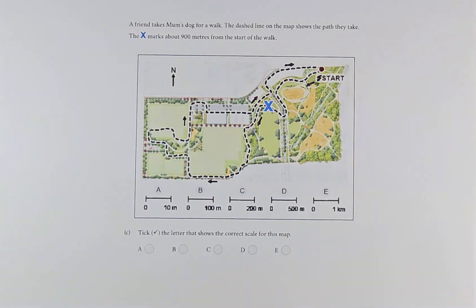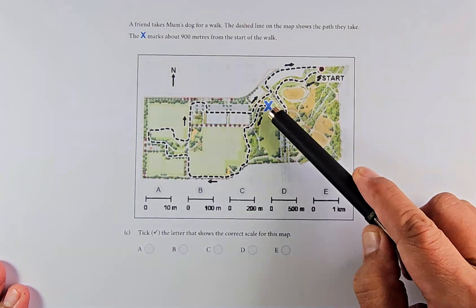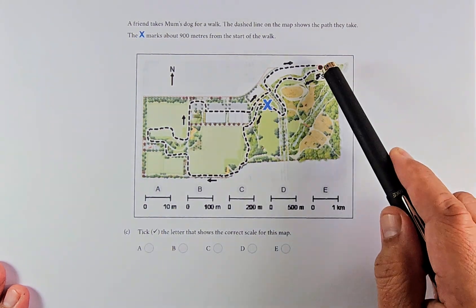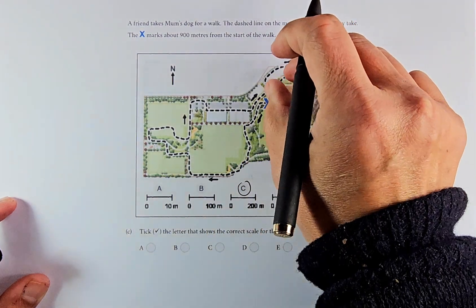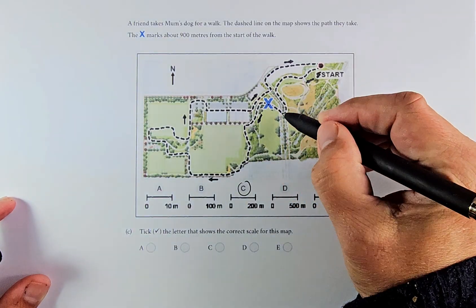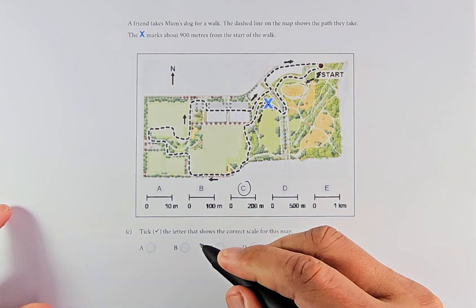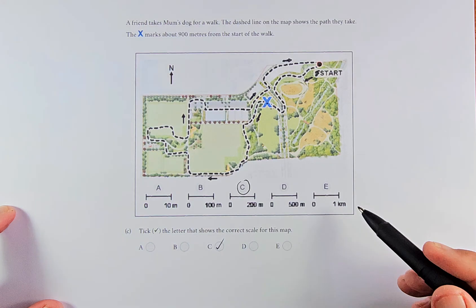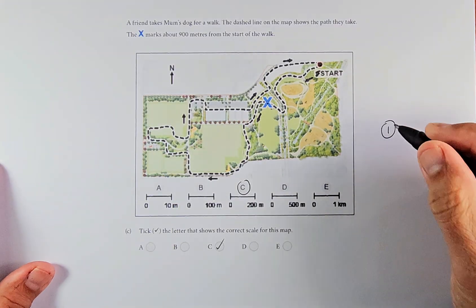1c is common sense. A friend takes mom for a walk. The dashed line shows the path they take. The X marks about 900 meters from the start of the walk. They're going to walk around here. Is it 10 meters? I don't think it's 10 meters, that's too short. Is it 100 meters? Maybe still too short. I think the answer is going to be C, because if it's around 200 meters here, it will take around 900 meters total. So technically the answer is C. Again, if you get this right, that is outcome number one.